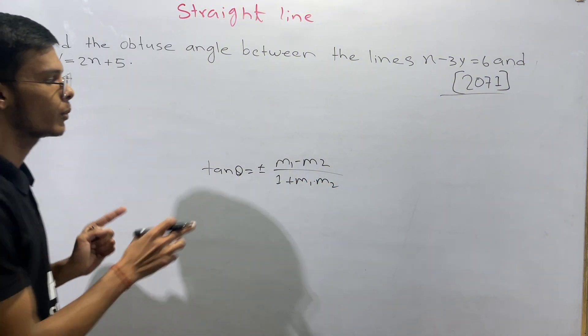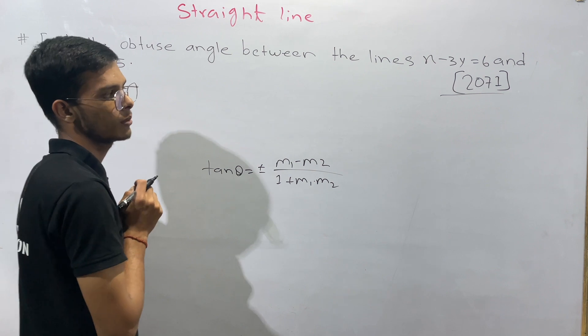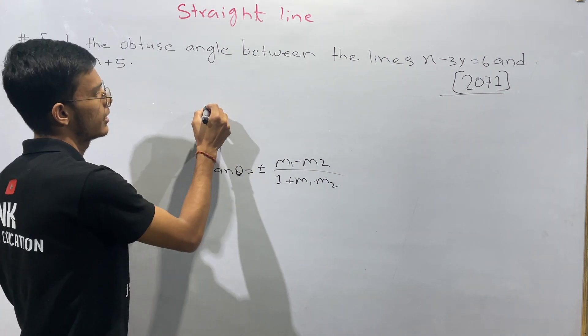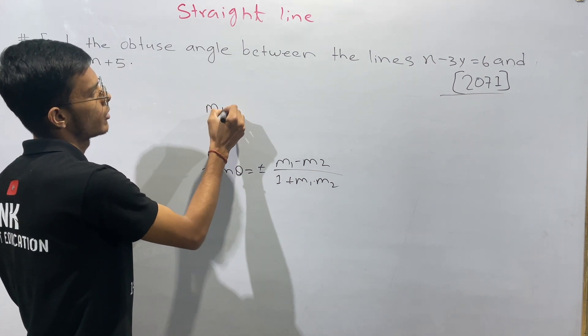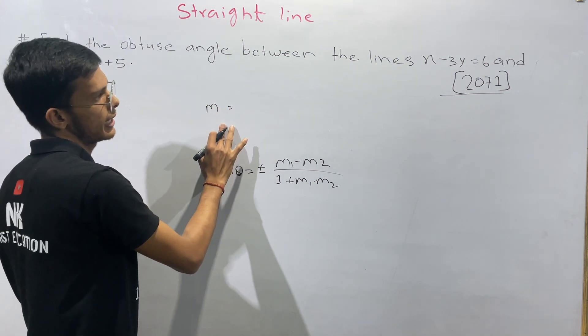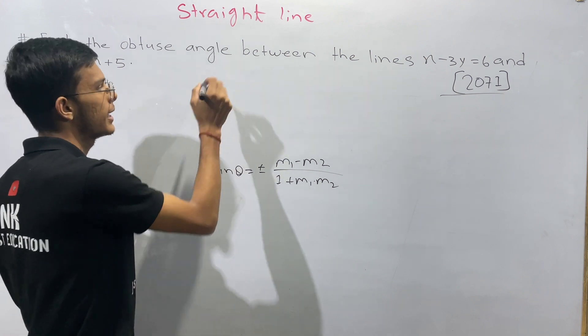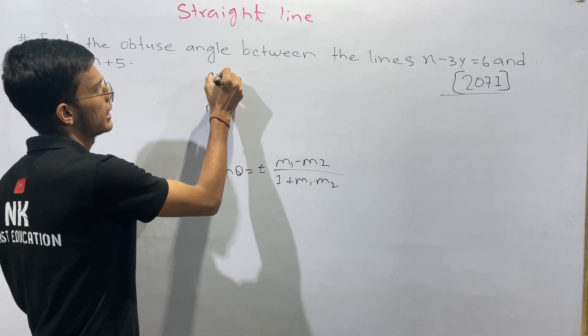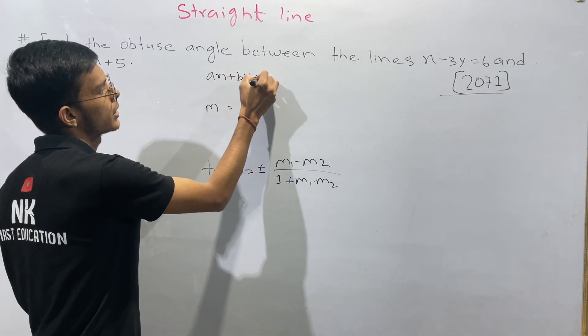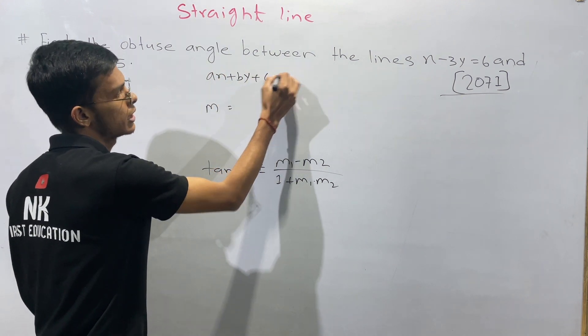If you want to find m1 and m2, we need to find the slope. We need to use the form ax plus by plus c equal to 0.